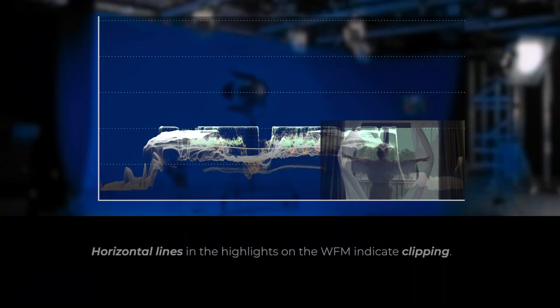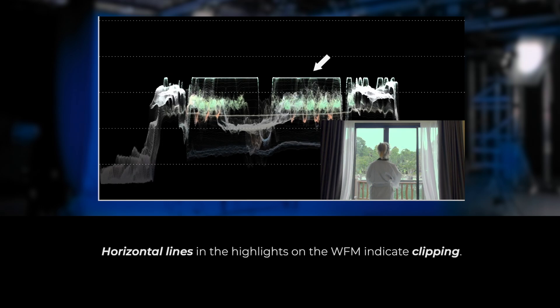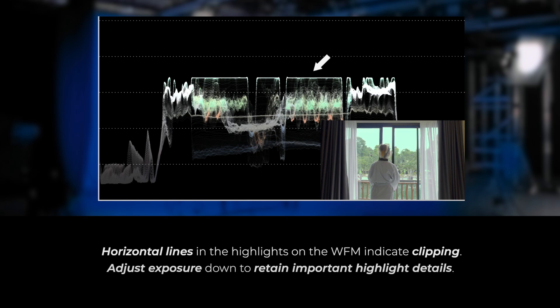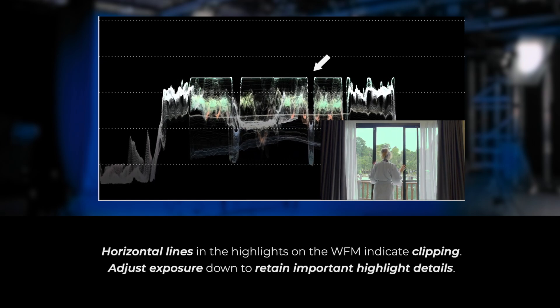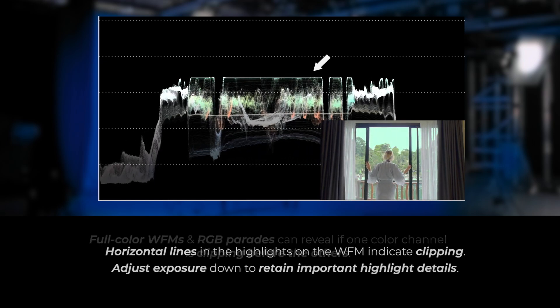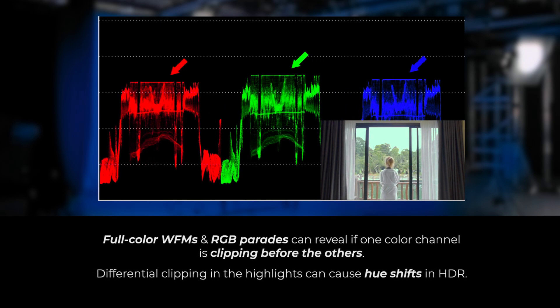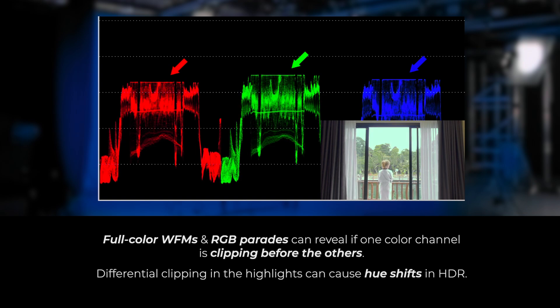Look for the telltale horizontal lines that indicate you're clipping your highlights, and adjust your exposure to retain the details if those are important to you. If you're using a full-color waveform or an RGB parade, you should be able to see clear indication if one color channel is clipping before the others, which can result in hue shifts in HDR. One thing to be careful of is that most of your darks are going to be shifted low on your waveform monitors.